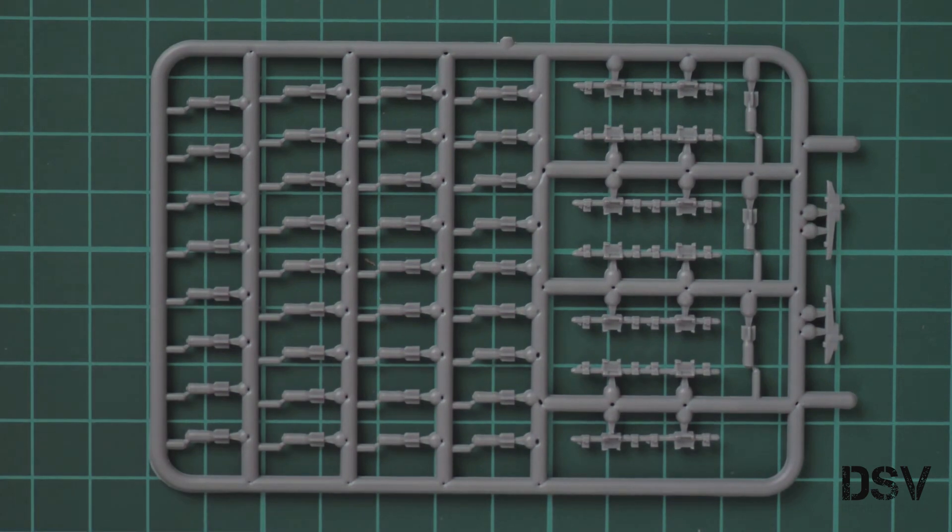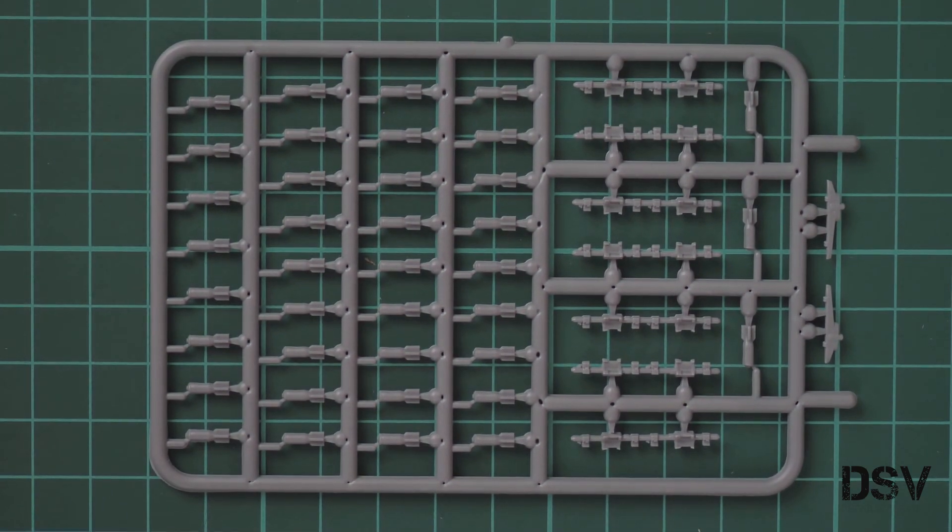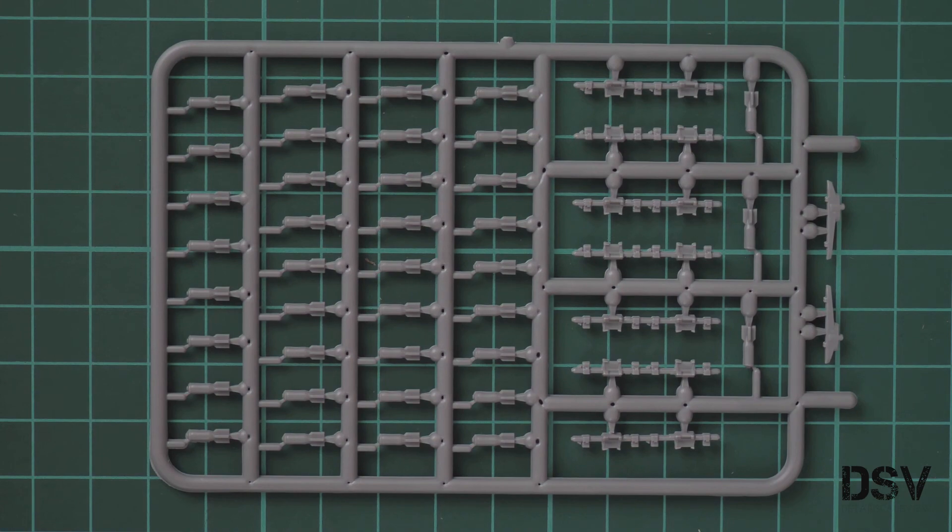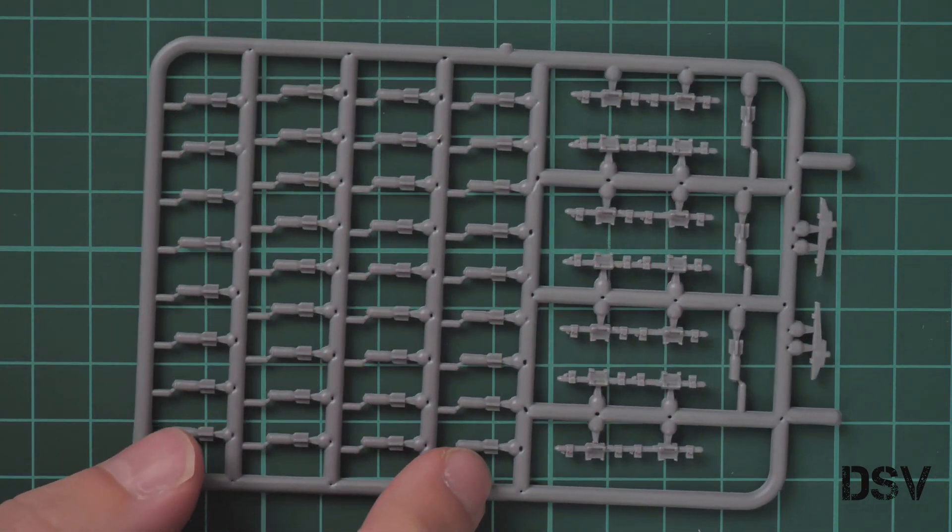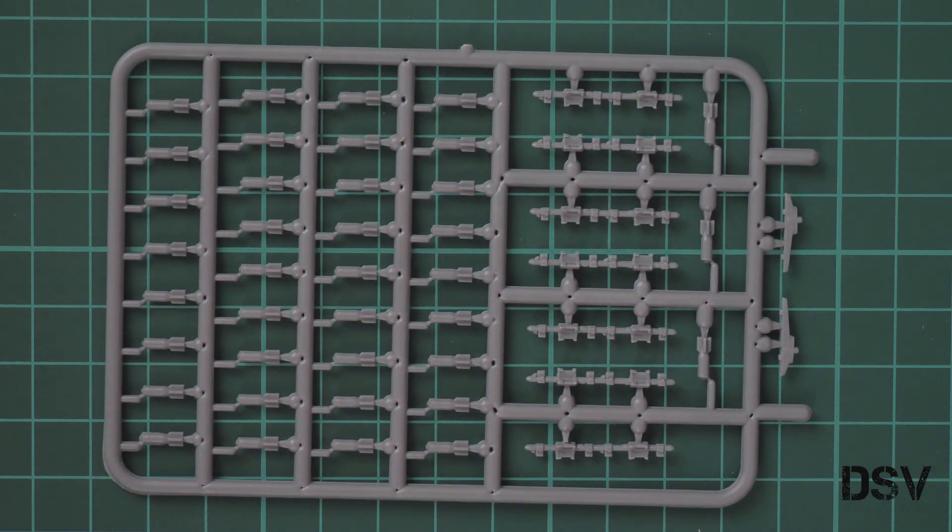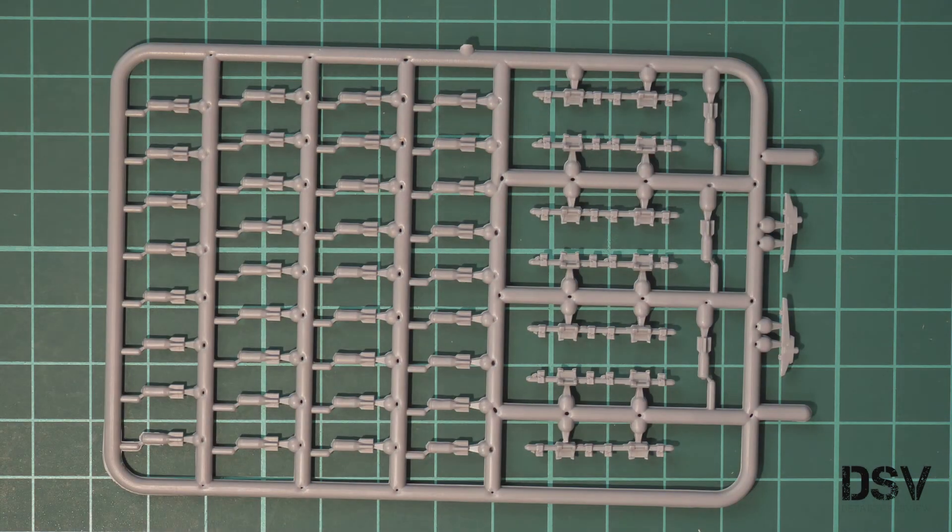Here we have armament, obviously bombs. As you can see, the bombs are molded as one-piece parts because this is 1/144 scale, so there's no need to mold them as a two-piece assembly. I'll use my phone's flashlight to show you more detail.